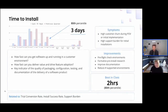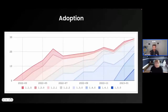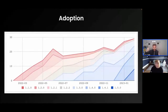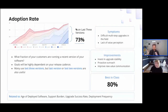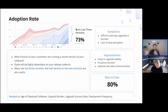That's installation. Getting into adoption is another key family of metrics. Here's a standard adoption chart showing on a given date how many customers are running each version of your software, with newer versions coming in at the right. The first metric we look at is generally called adoption rate — the percent of folks on the last three versions, though some use last two or last one depending on release cadence. Best in class here is around 80%.